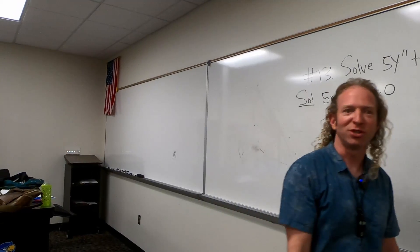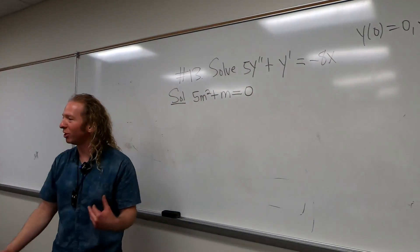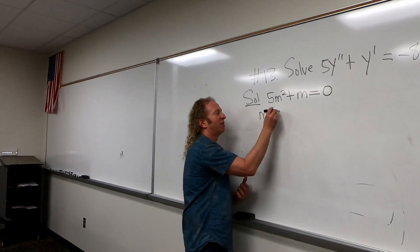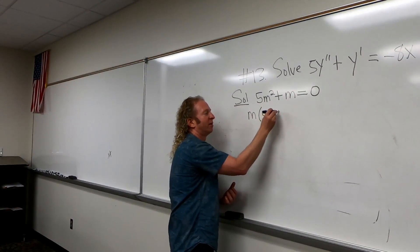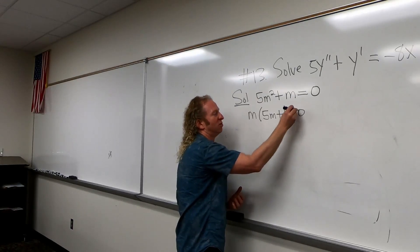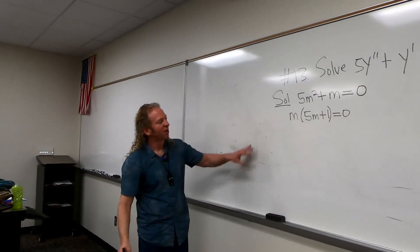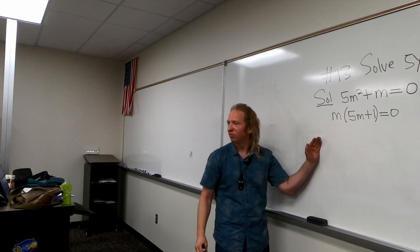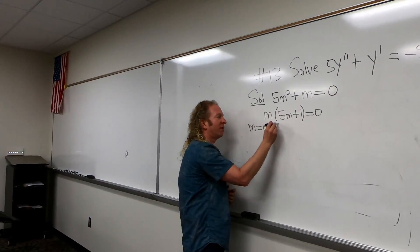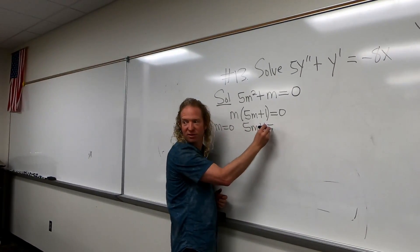Then we can solve this equation. We can pull out the m, so you get m times (5m plus 1) equals 0. So with the product equal to 0, you set each piece equal to 0. So m is equal to 0, or 5m plus 1 is equal to 0.